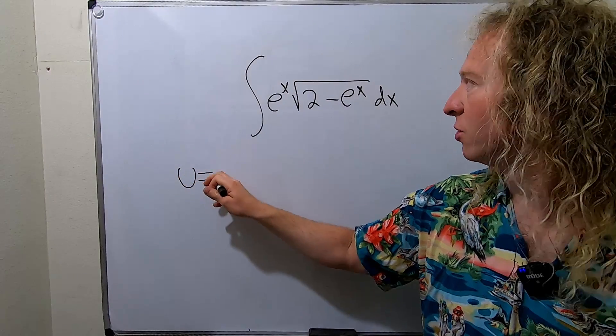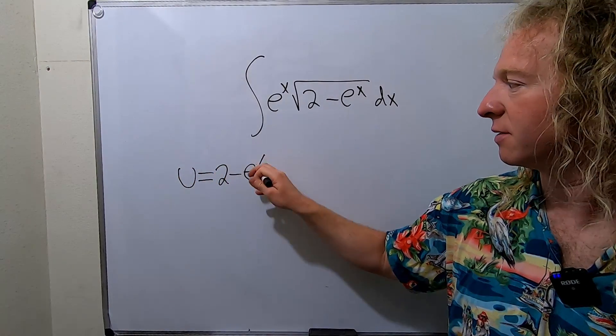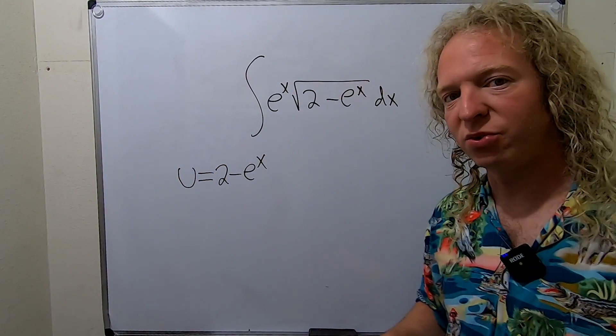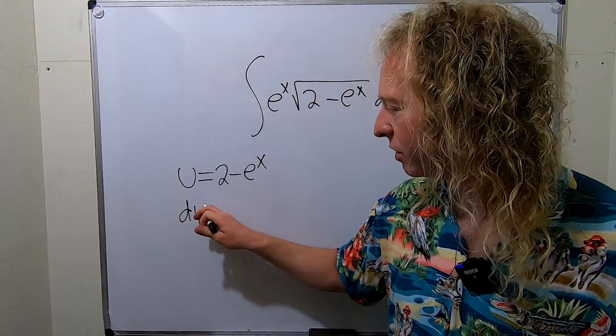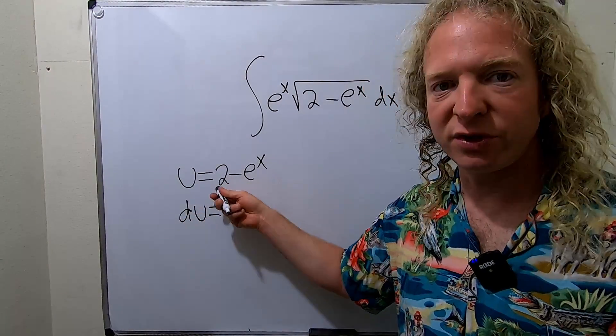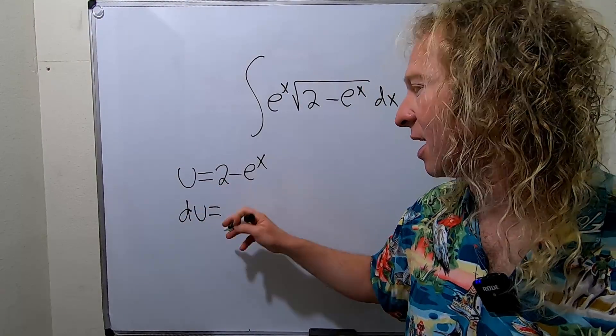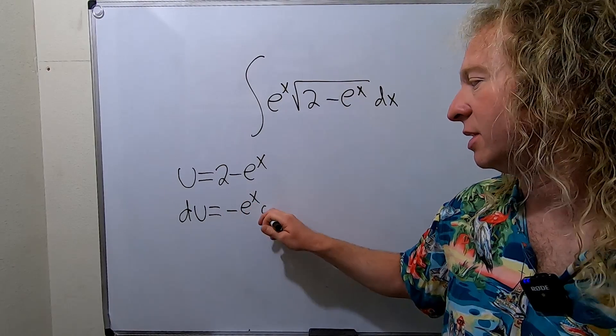So we'll let u equal 2 minus e to the x. And now we'll compute the derivative. So du, well the derivative of 2 is 0, the derivative of e to the x is e to the x. So we just get negative e to the x dx.